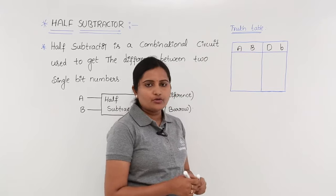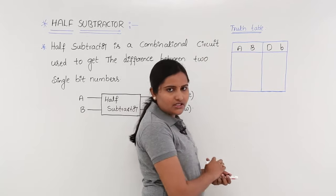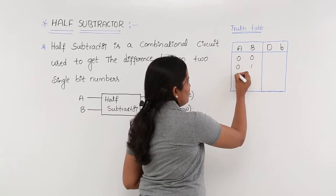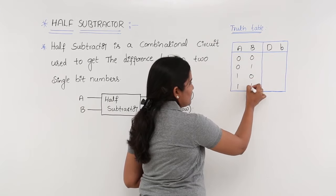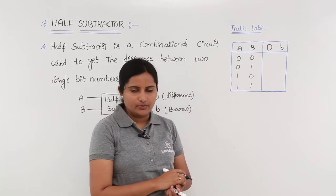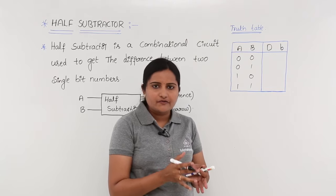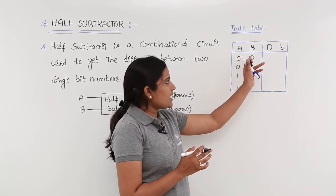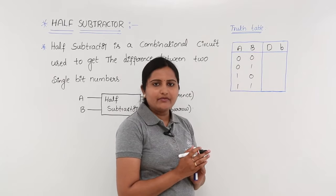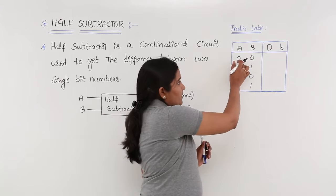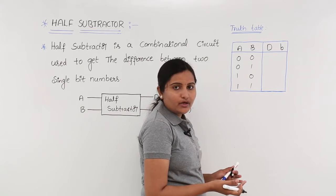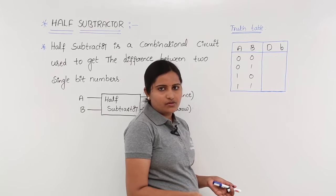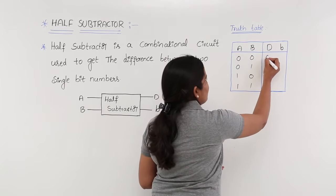For two input variables we may have four combinations: 00, 01, 10, and 11. These are all possible combinations with two input variables. Now for the subtraction functionality, we consider A minus B. If you take the difference between 0 and 0, that is normal arithmetic subtraction — 0 minus 0 is equal to 0, and there is no borrow.